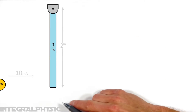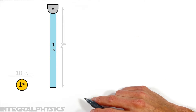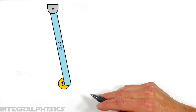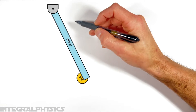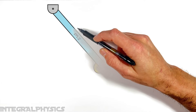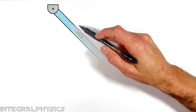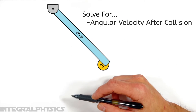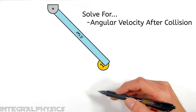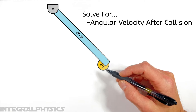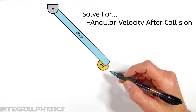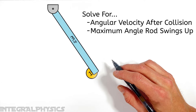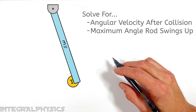Today we have a projectile that while traveling horizontally strikes and sticks to the end of a rod that's hanging at rest from a pin. We're going to solve for the angular velocity of the rod and the ball immediately after the collision, as well as how far this rod swings upward after the collision.